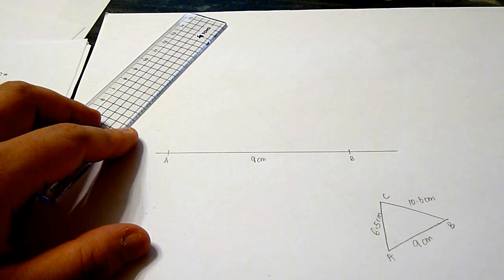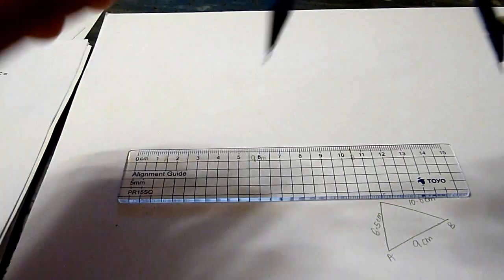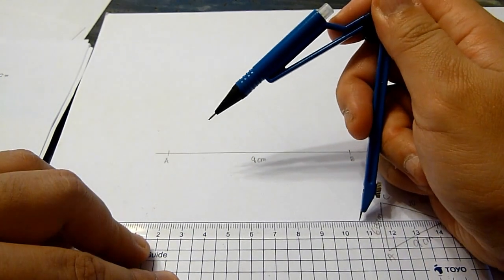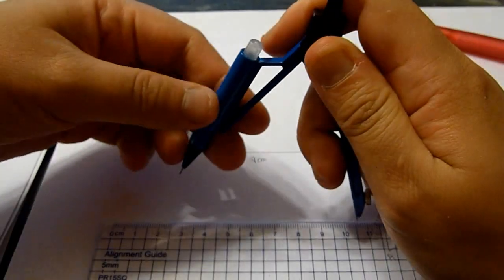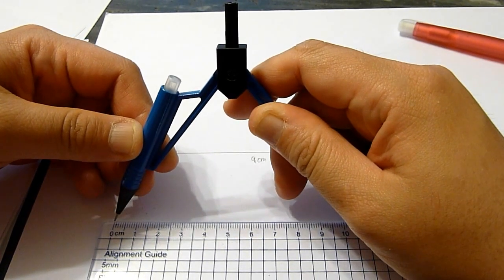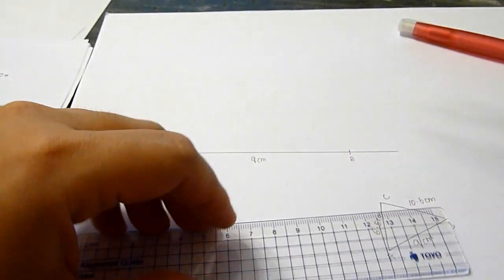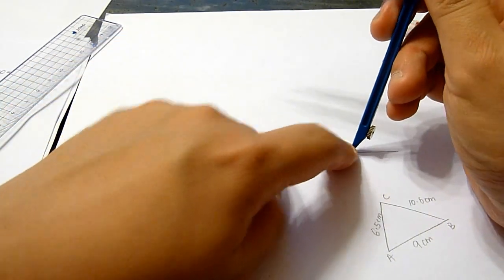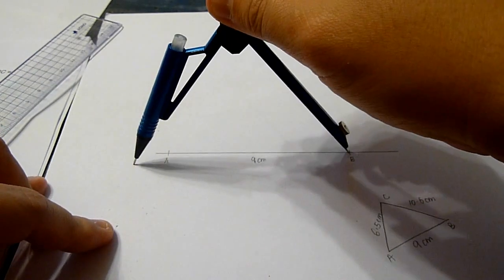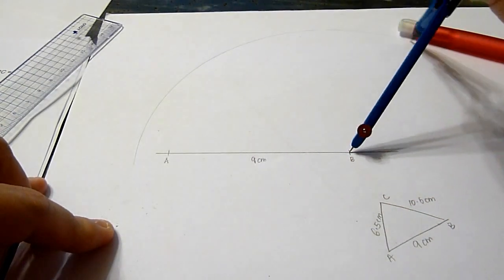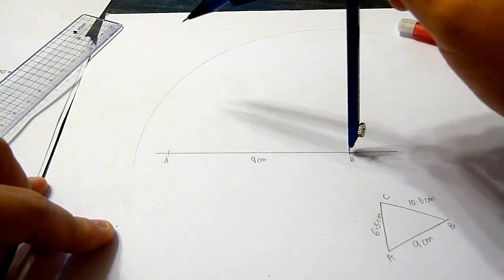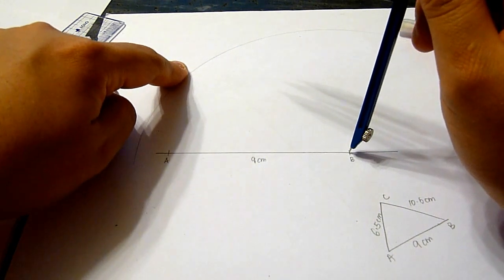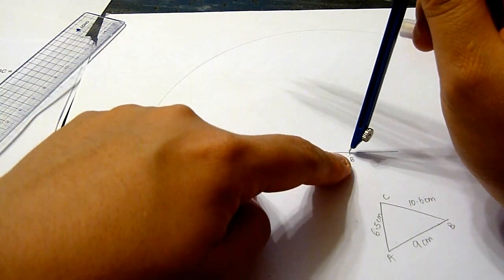To construct the two other sides, first I will do BC which is 10.6 cm. Now the arm of this compass has been stretched to 10.6 cm. I will place the sharp end at point B and draw an arc around it. Any point on the arc would be 10.6 cm away from point B.